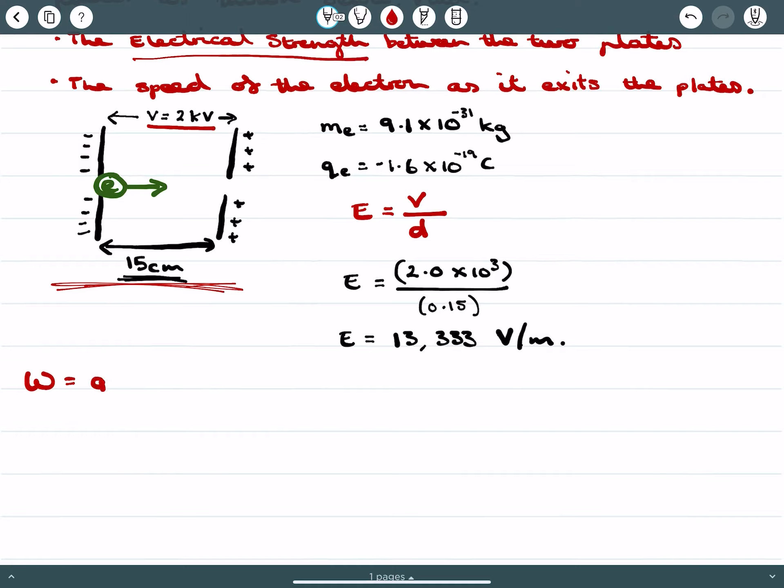it's generally given by Q, the charge that the particle carries, times by the electrical field strength and the distance. Now this ED is a revision of this equation where our potential difference equals the field strength times the distance put apart. So we can say that this is Q times the potential difference, or the voltage.